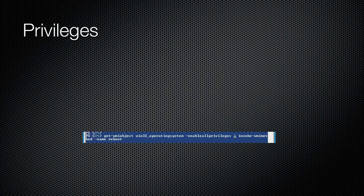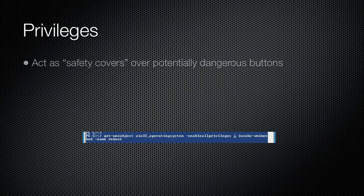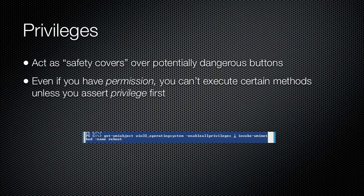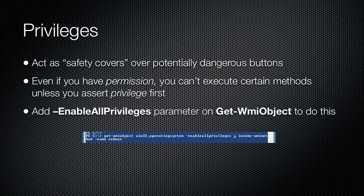Some methods, especially those which perform security-sensitive operations, may require extended privileges. These privileges are not quite the same thing as permissions. Even though as an administrator you may have permission to perform these tasks, the extended privilege acts as a sort of safety lockout to prevent you from doing something accidentally, such as clearing the security event log or restarting a computer. To enable extended privileges, use the EnableAllPrivileges cmdlet parameter. Method documentation, if it exists, generally specifies when an extended privilege is required.